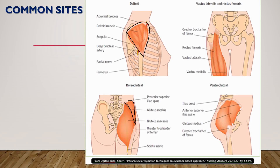The muscle injected in both the dorsogluteal and ventrogluteal sites is the gluteus medius. The vastus lateralis is often used for infants and toddlers, where the injection is given on the mid-thigh on the lateral side. These are the common choices of injection sites.